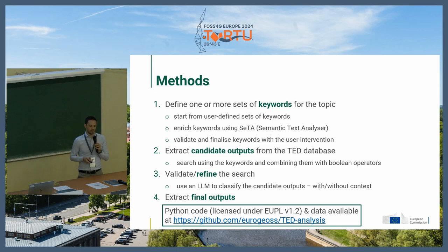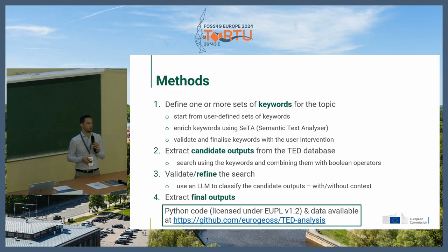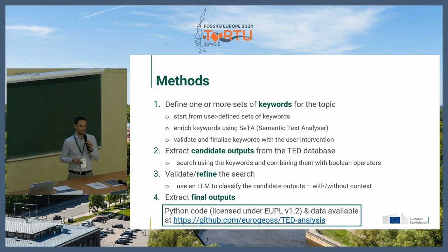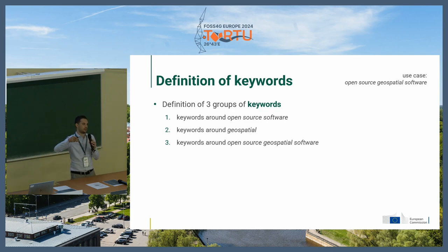The whole procedure is written in Python, licensed under the European Union Public License. It's available and reproducible — there are only some parts, like the use of large language models, for which you would need a token for an internal API. But you can still access the code. We also provide a portion of the database so you can experiment with it. From now on, I will focus on one use case — open source geospatial software — to illustrate the methodology, and then show results for all use cases.